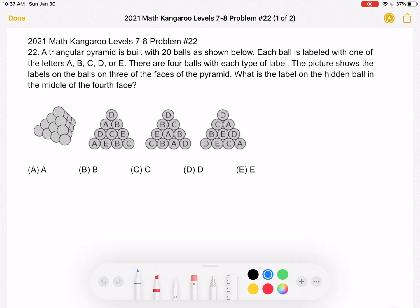There are four balls with each type of label. The picture shows the labels on the balls on the three faces of the pyramid. What is the label on the hidden ball in the middle of the fourth face? A, B, C, D, or E.